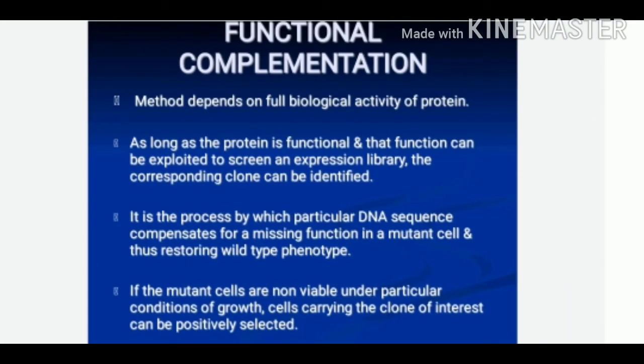The next method for screening of a cDNA library is functional complementation. This method depends on the full biological activity of the protein. It is the process by which a particular DNA sequence compensates for a missing function in a mutant cell, thus restoring the wild-type phenotype. If the mutant cells are non-viable under particular conditions of growth, cells carrying the clone of interest can be positively selected.